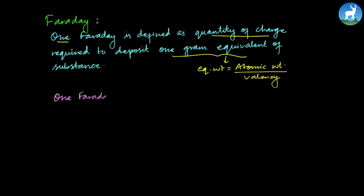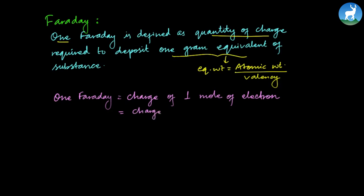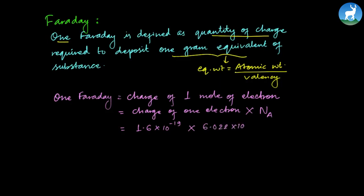One faraday is equal to the charge of one mole of electrons. This is calculated as the charge of one electron multiplied by Avogadro's number: 1.6 × 10⁻¹⁹ coulombs times 6.022 × 10²³, giving approximately 96,500 coulombs. Therefore, one faraday equals 96,500 coulombs.